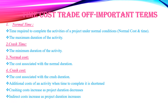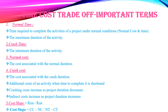Indirect cost increases as the project duration increases. Cost slope is the ratio of rise to run, calculated as: Cost Slope = (Crash Cost − Normal Cost) / (Normal Time − Crash Time).